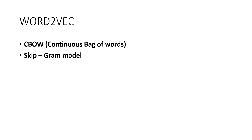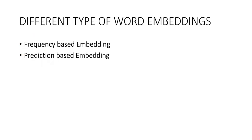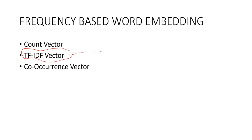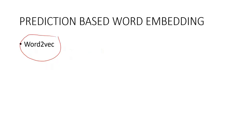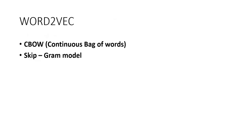The prediction-based word embedding technique is word to vector, which is really important. This process contains two methods: one is the continuous bag of words model and the other is the skip-gram model. Combining these two algorithms, we get the word to vector algorithm. In the next video we will be covering the continuous bag of words model and the skip-gram model to understand word to vector correctly. So that covers the different types of word embedding techniques: frequency-based embedding with count vector, TF-IDF vector, and co-occurrence vector; and prediction-based embedding that is word to vector.